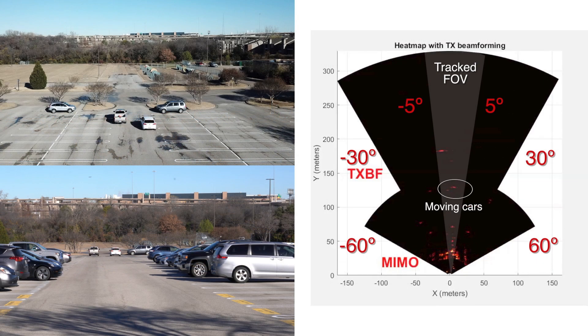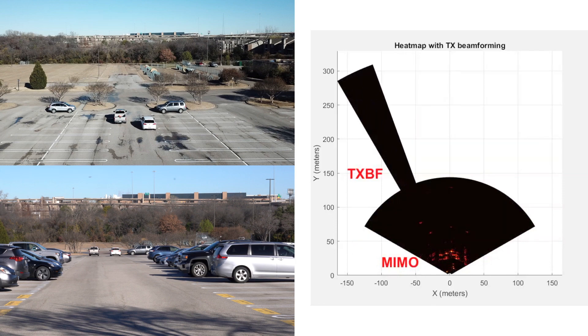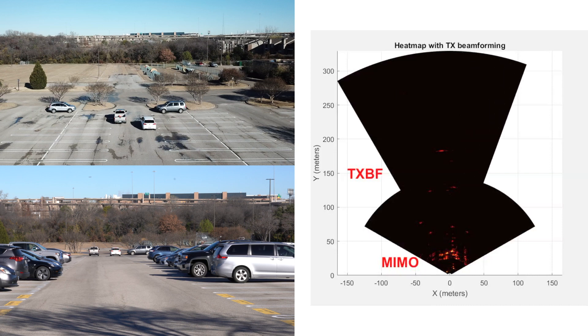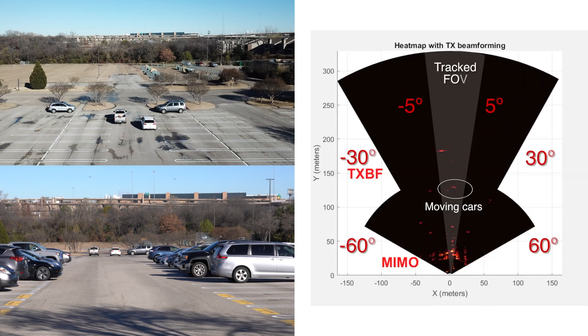As shown in the GUI, the range and azimuth heatmap of the two modes are overlapped. Initially, we start scanning the scene in TX beamforming mode within 60-degree field of view and up to 350 meters to lock on the targets to be tracked in the long range.